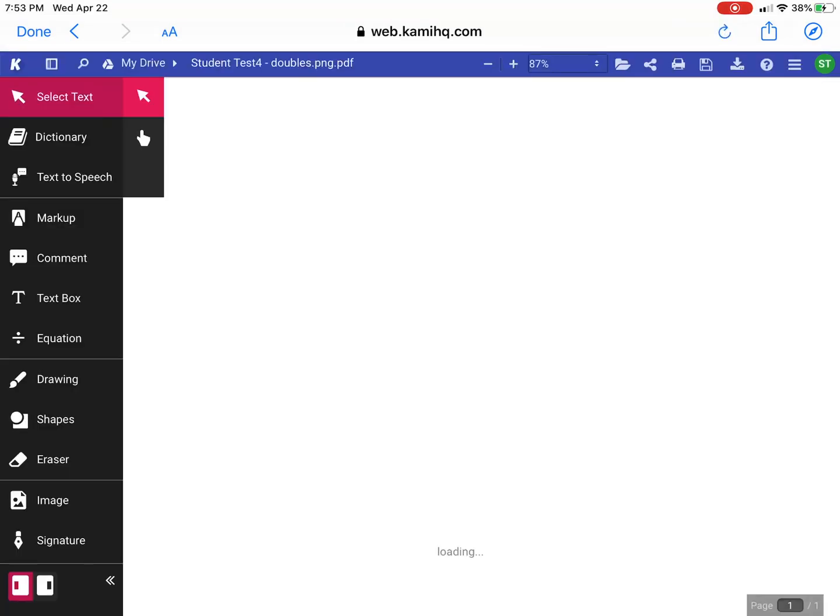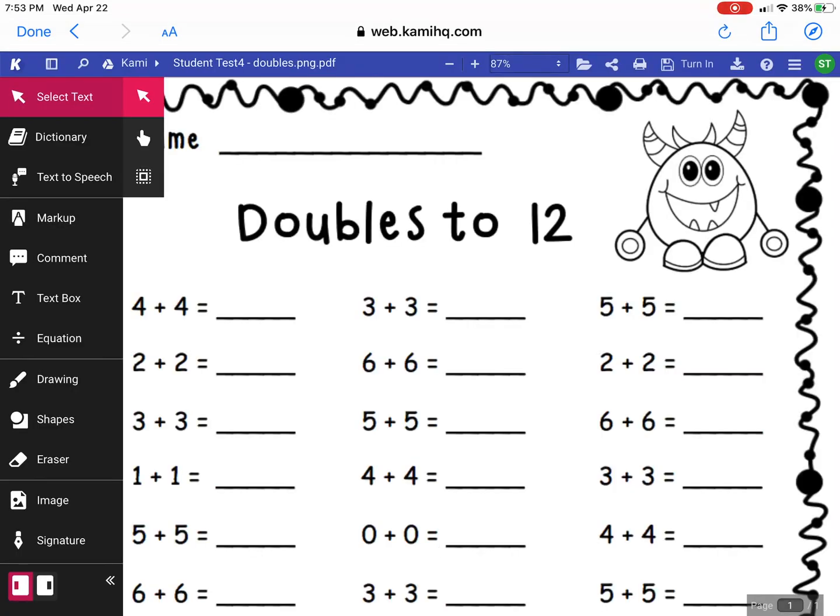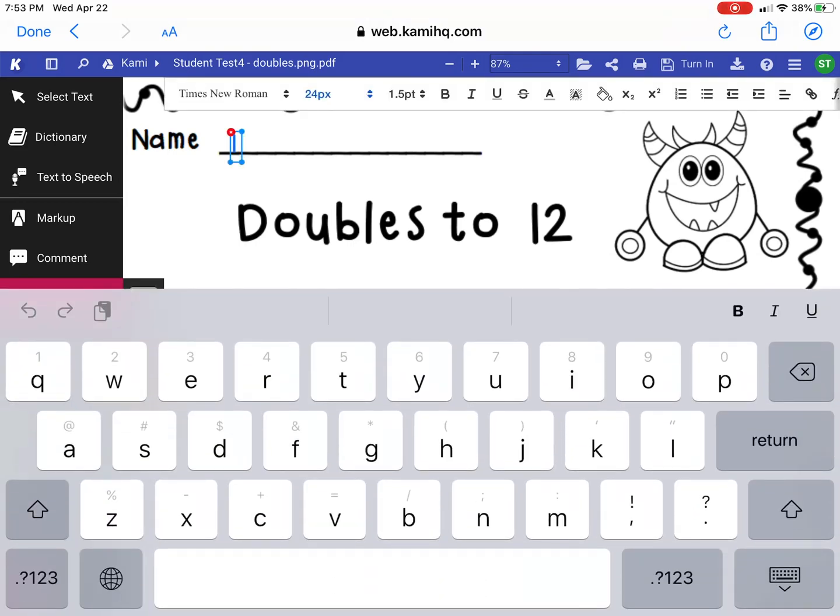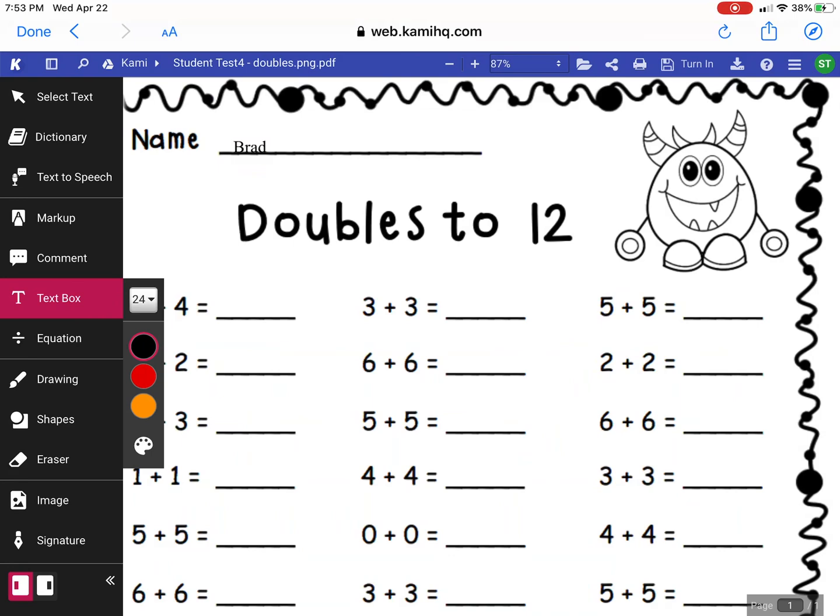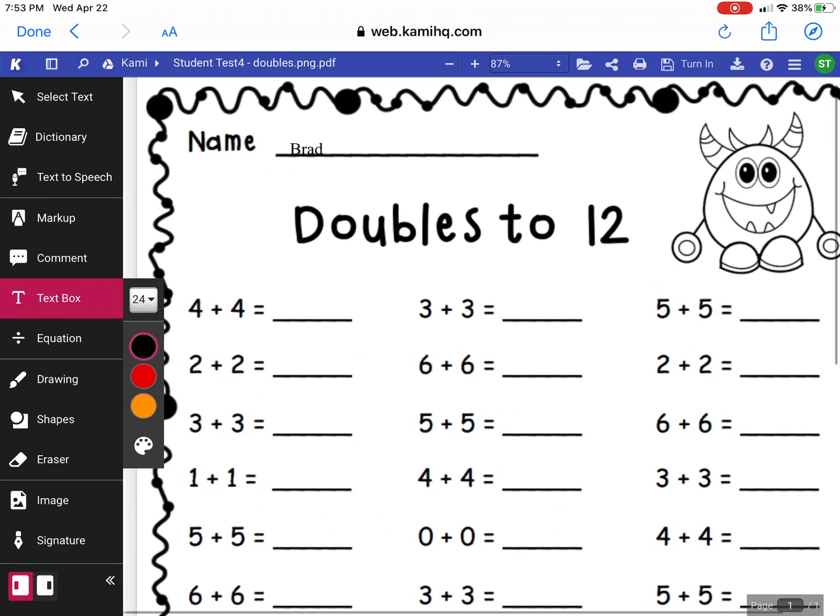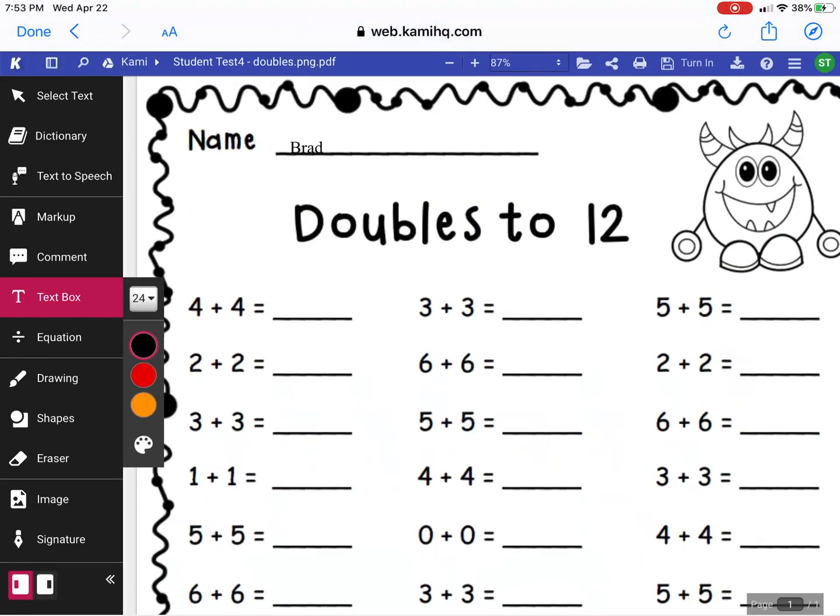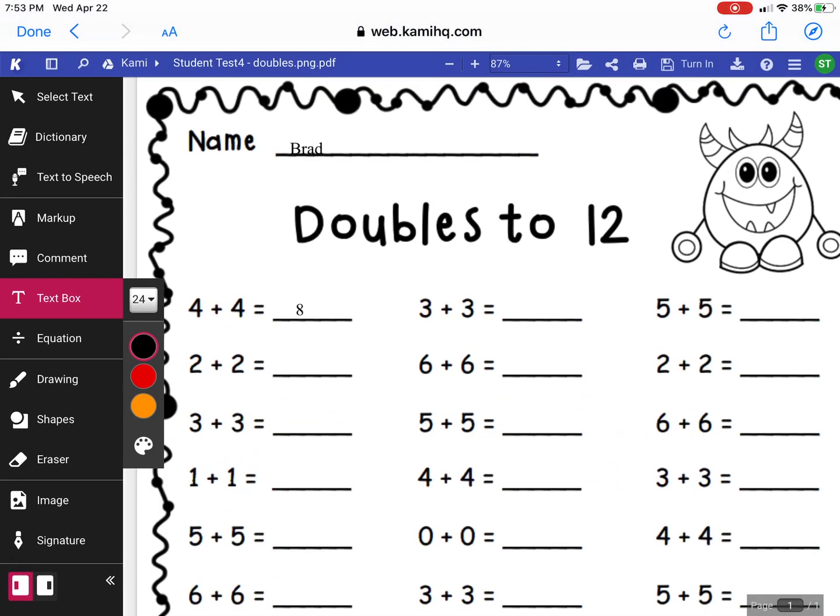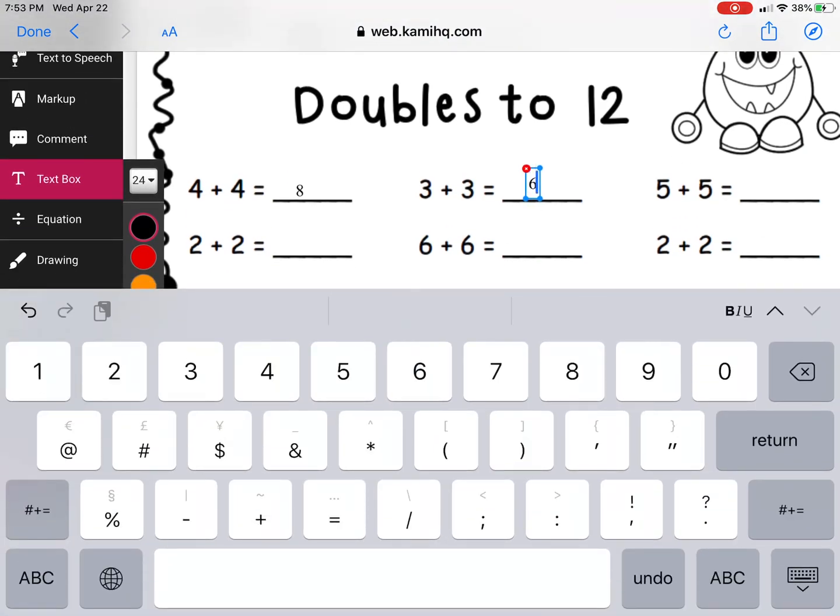You'll then see the annotation tools come up on the left hand side. At this point you can start filling out this PDF. I'm going to select text box, change my font size to 24, and type my name in. Now you can go ahead and fill out this PDF as you would like. I'm only going to fill in the first two and then we're going to turn this in.